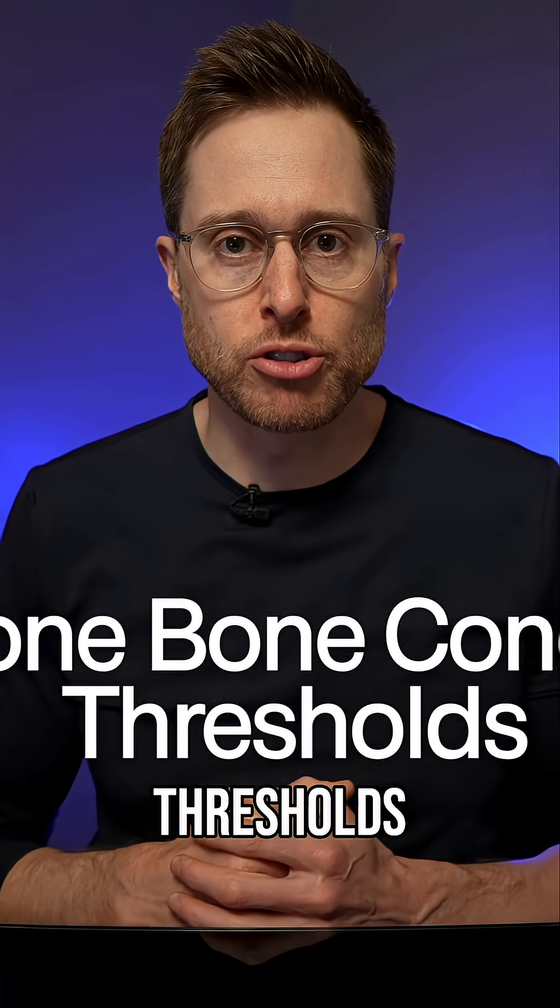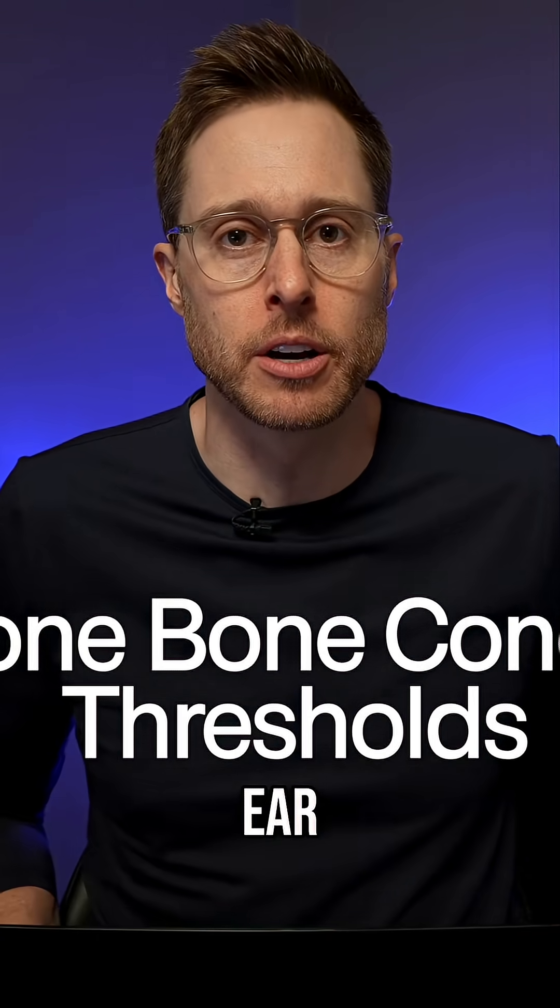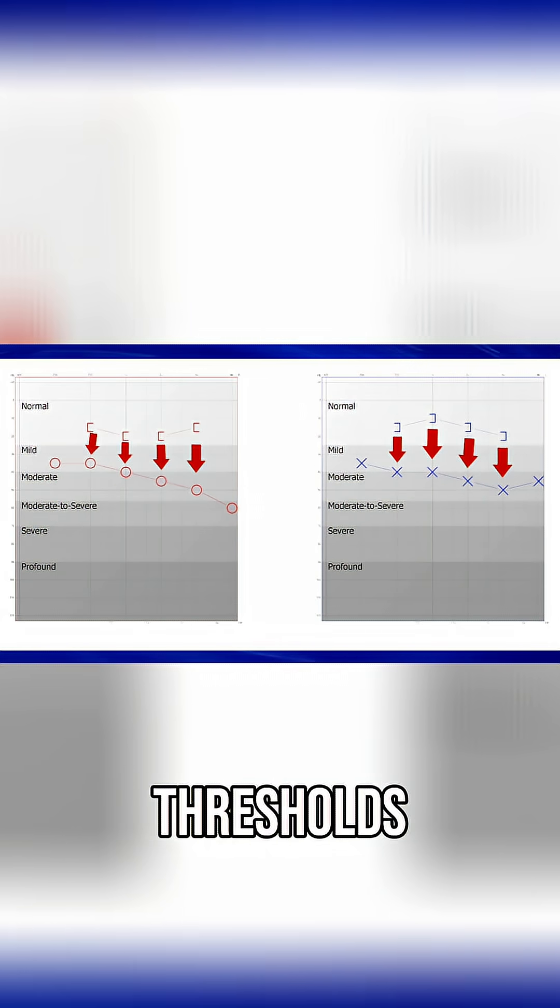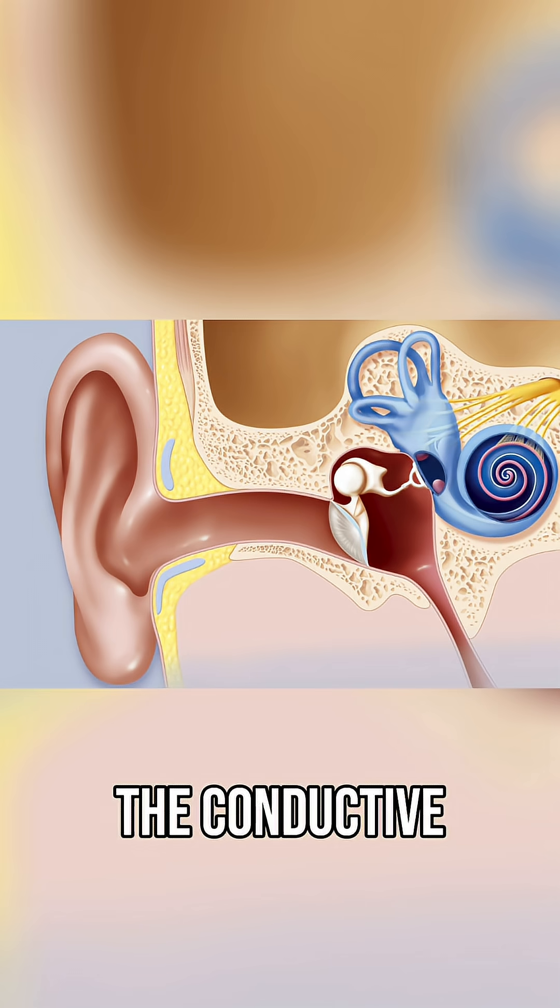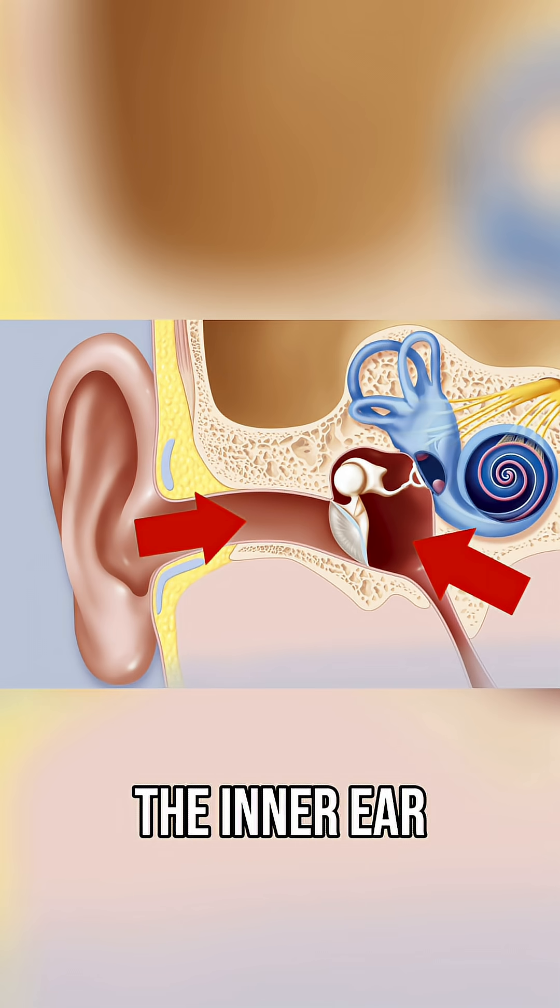Pure Tone Bone Conduction Thresholds indicate where the hearing loss is actually located inside of the three parts of your ear. If there's a gap between the air conduction thresholds and the bone conduction thresholds, it can indicate an issue with the conductive pathway of sound through the outer ear or the middle ear on the way to the inner ear.